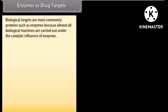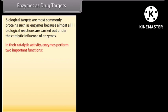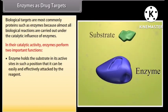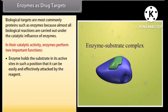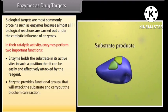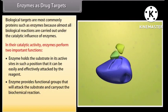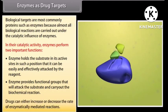Biological targets are most commonly proteins such as enzymes, because almost all biological reactions are carried out under the catalytic influence of enzymes. In their catalytic activity, enzymes perform two important functions: first, enzymes hold the substrate at their active sites in such a position that it can be easily and effectively attacked by the reagent; second, the enzyme provides functional groups that will attack the substrate and carry out the biochemical reaction. Drugs can either increase or decrease the rate of enzymatically mediated reactions.